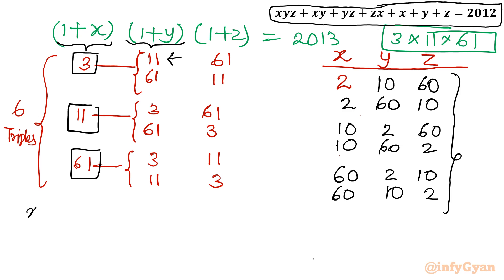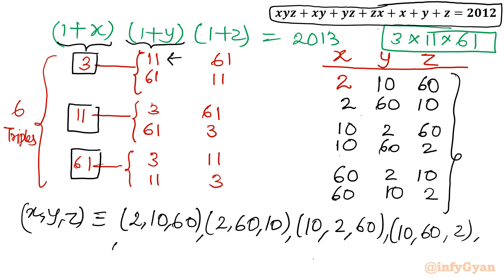So let me write the triples x, y, z. It would be 2, 10, 60; 2, 60, 10; then third value would be 10, 2, 60; 10, 60, 2; 60, 2, 10; and last value is 60, 10, 2. This is how we will find out.